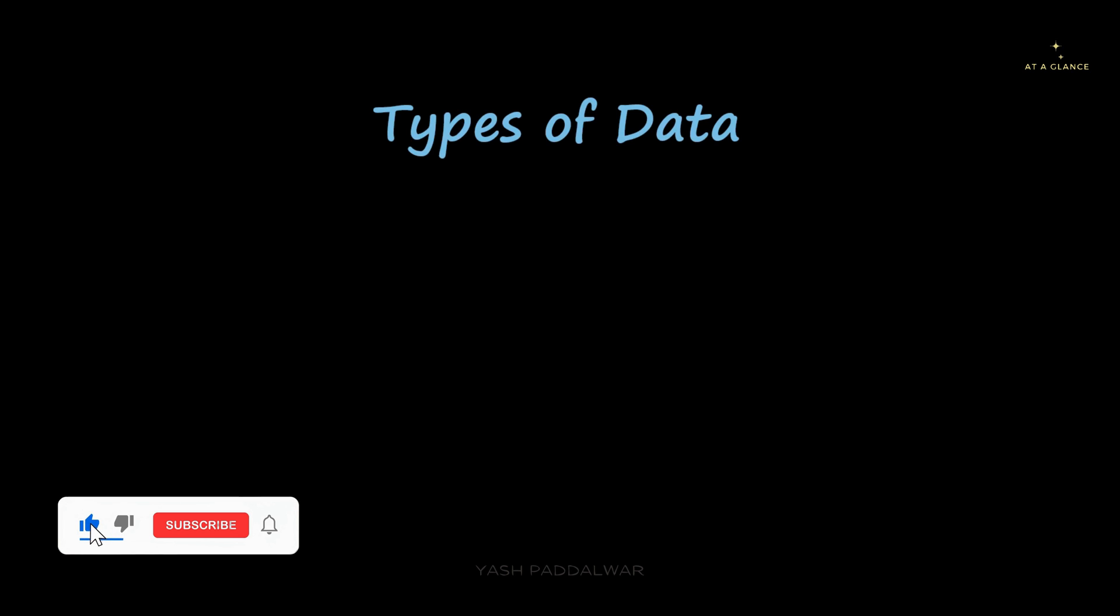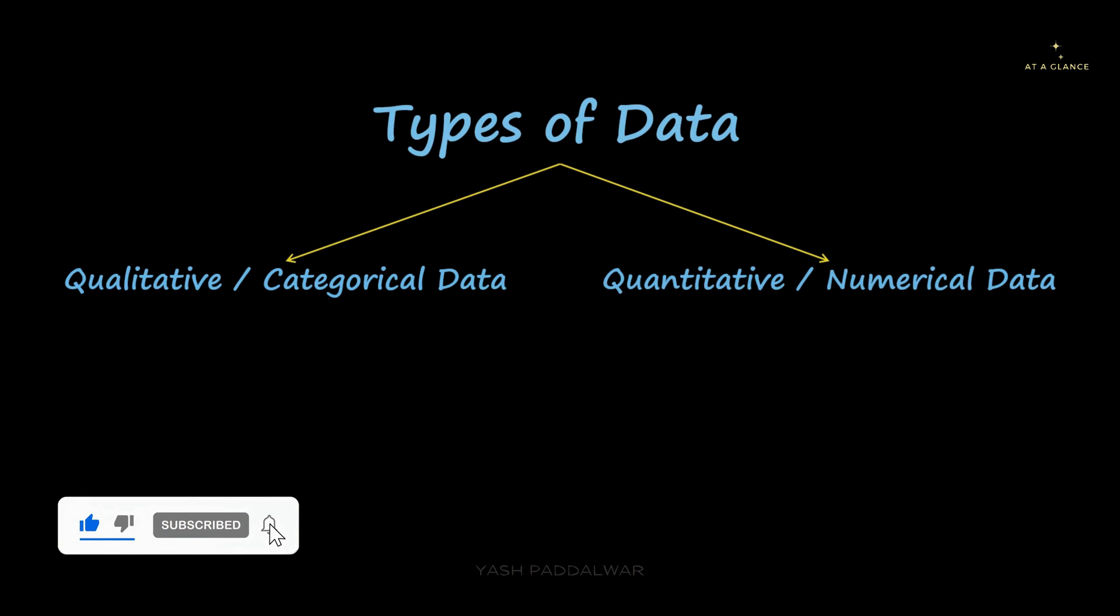Broadly, data is categorized into two types. The first type is qualitative, or we can also call it categorical data. The second type is quantitative, or we can also call it numerical data.